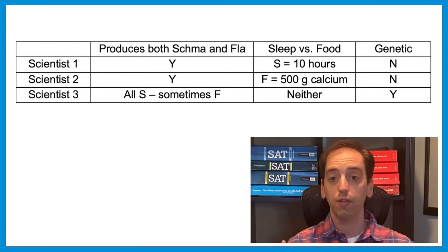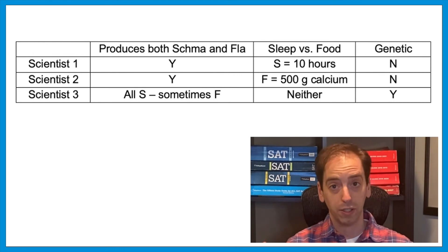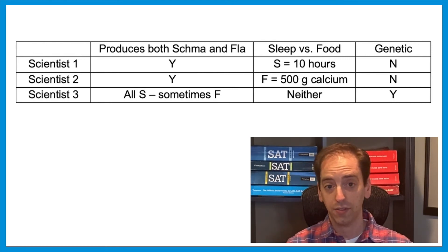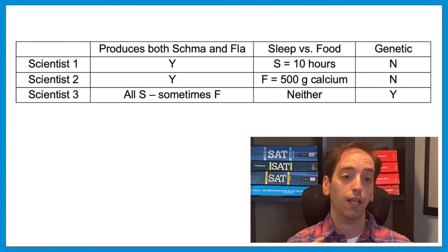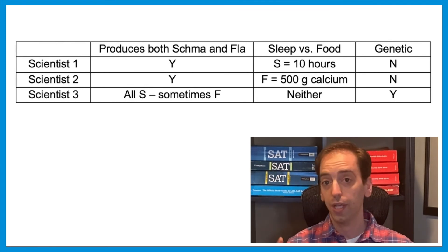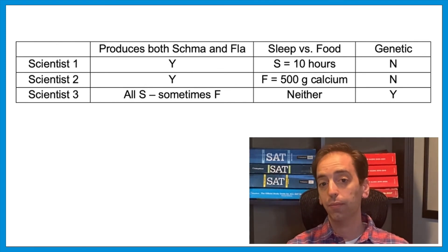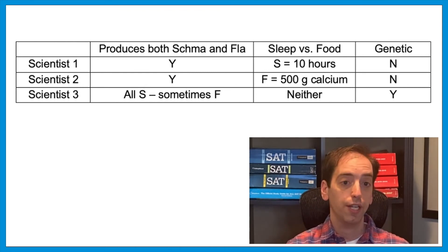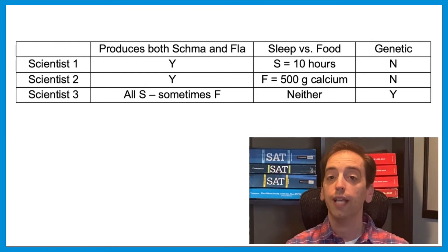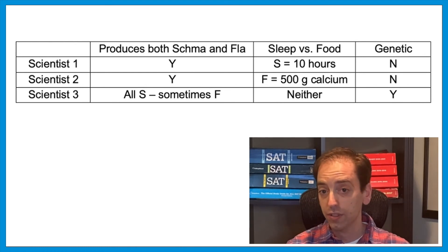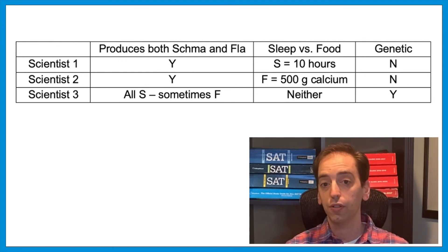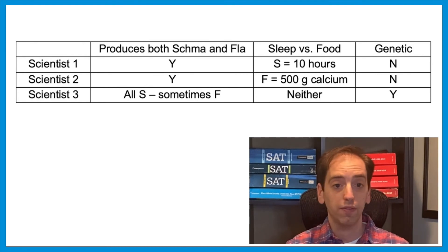A question from this passage might ask you to recognize that black fur is a recessive trait, since it would only appear if both alleles were lowercase — at least according to scientist 3. Like we said at the top, once in a while they might pull from actual science facts. But look at how the chart makes it easier for you to analyze all of these details. It's far easier to process this information when you see it laid out in front of you visually, instead of trying to find all of the details within the paragraphs themselves.